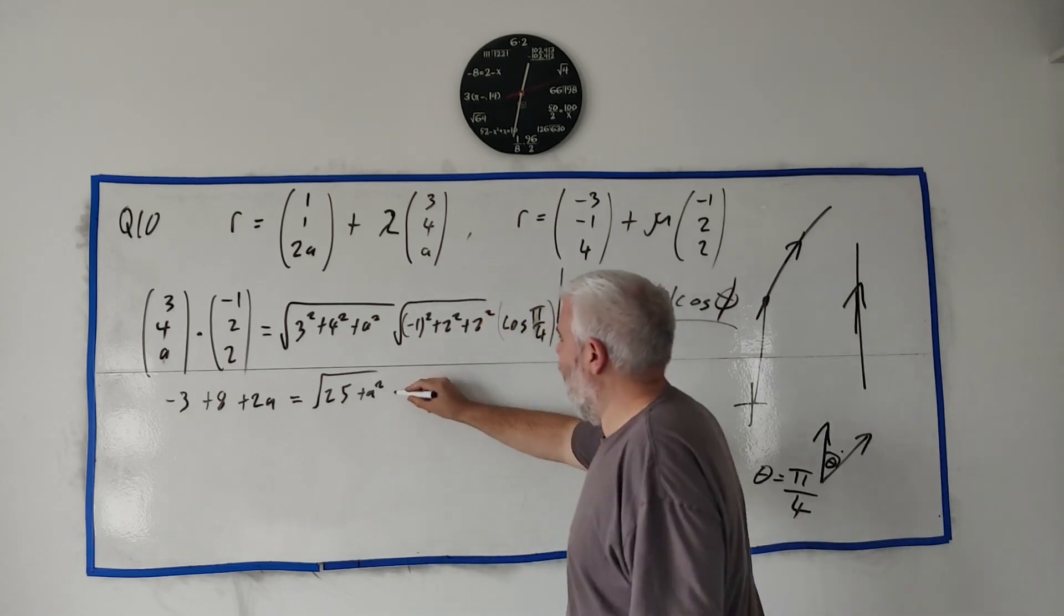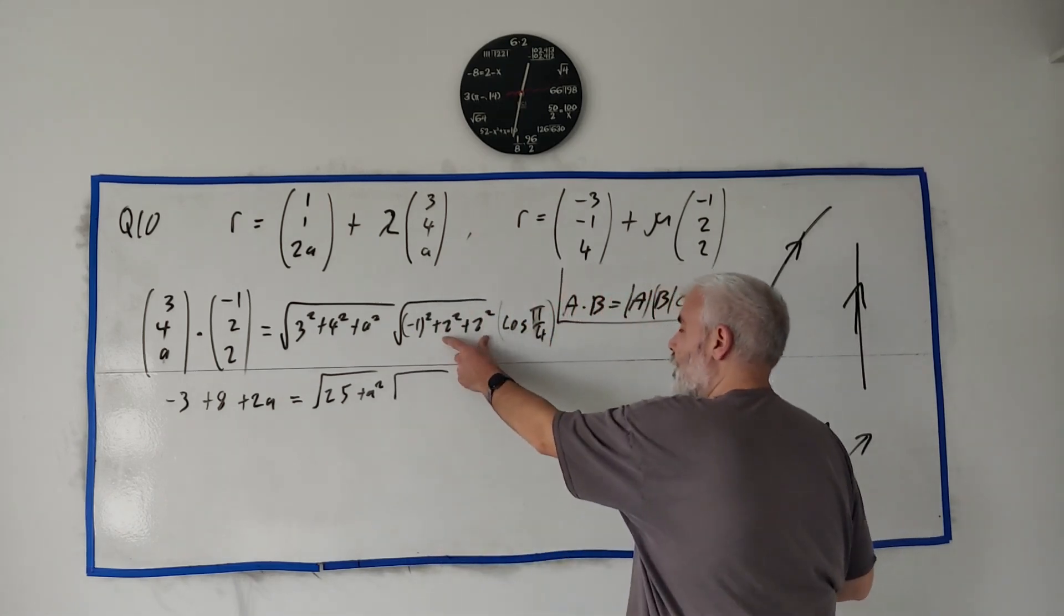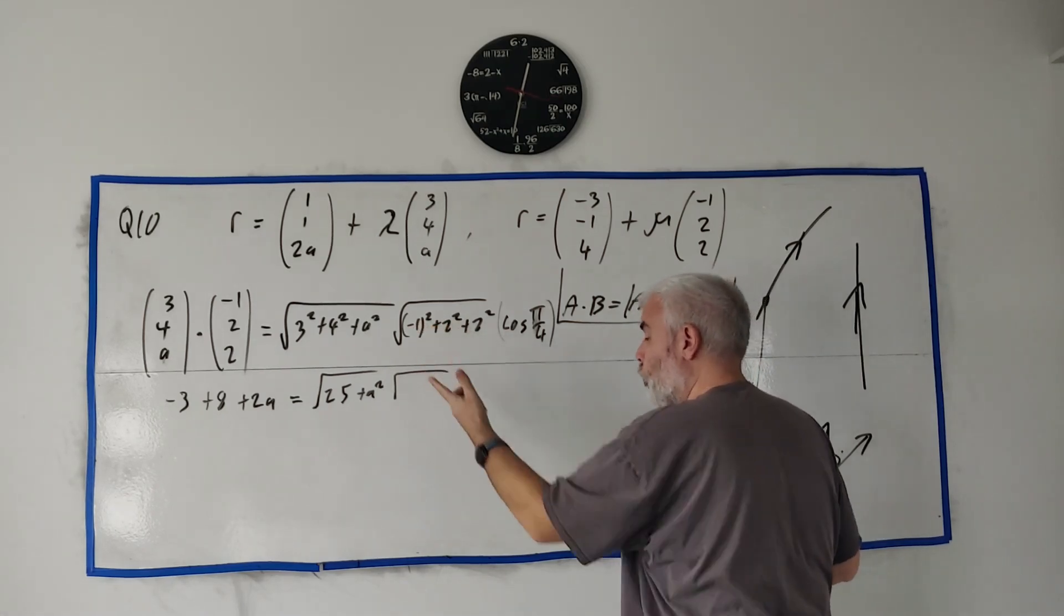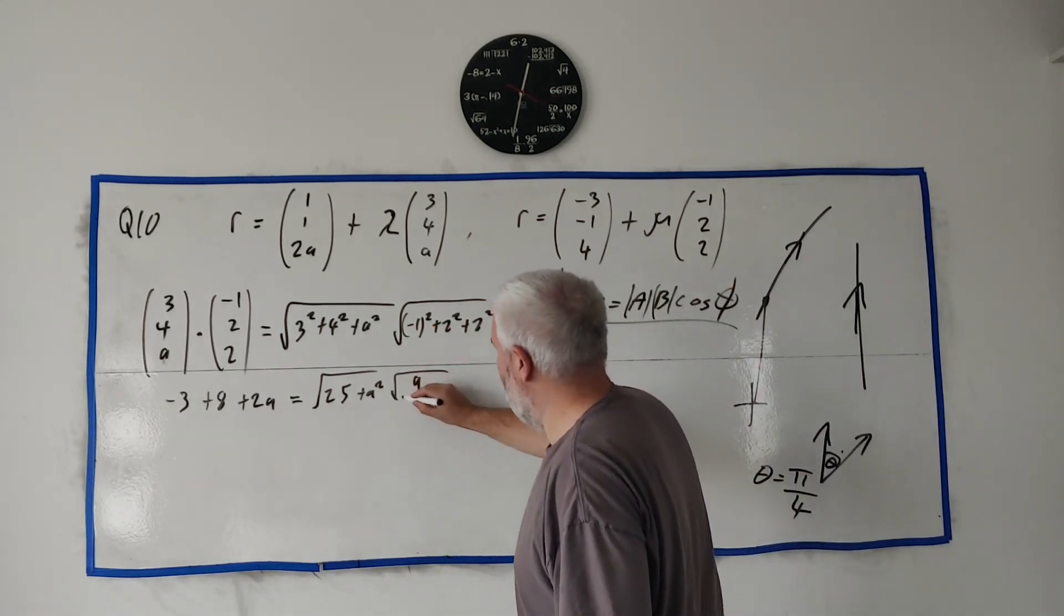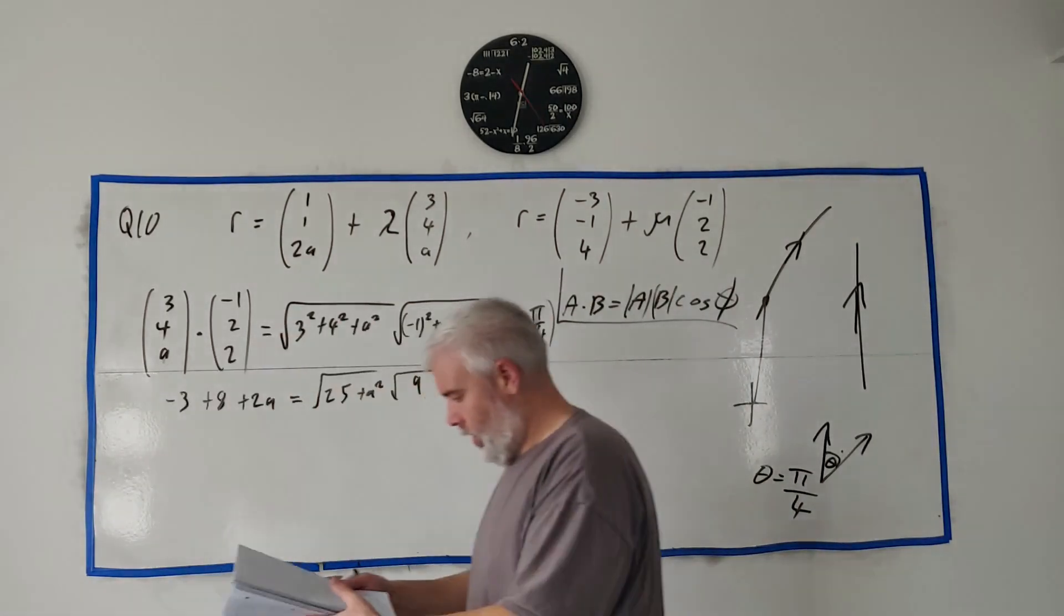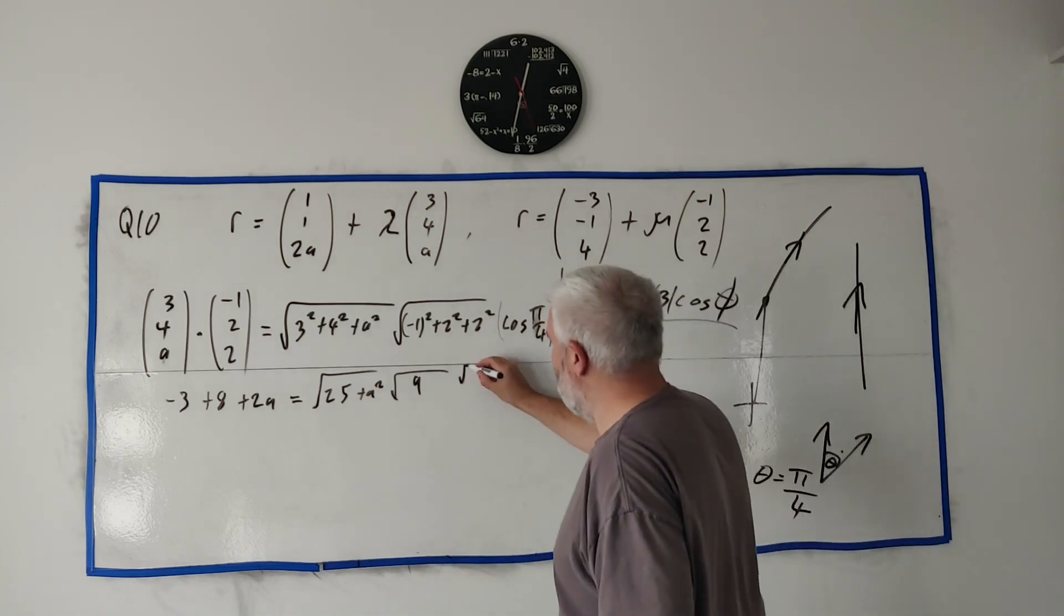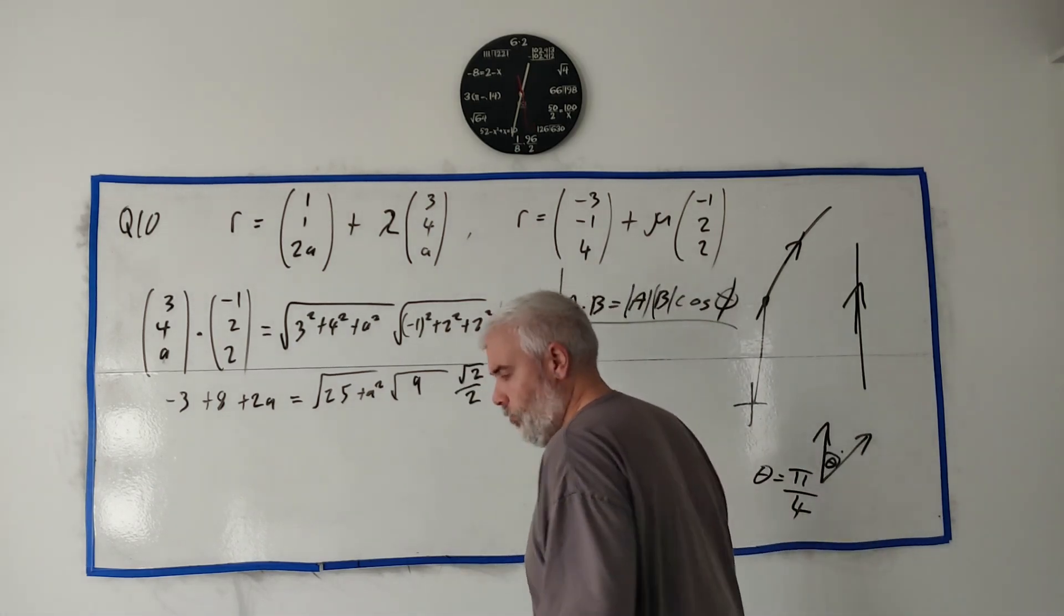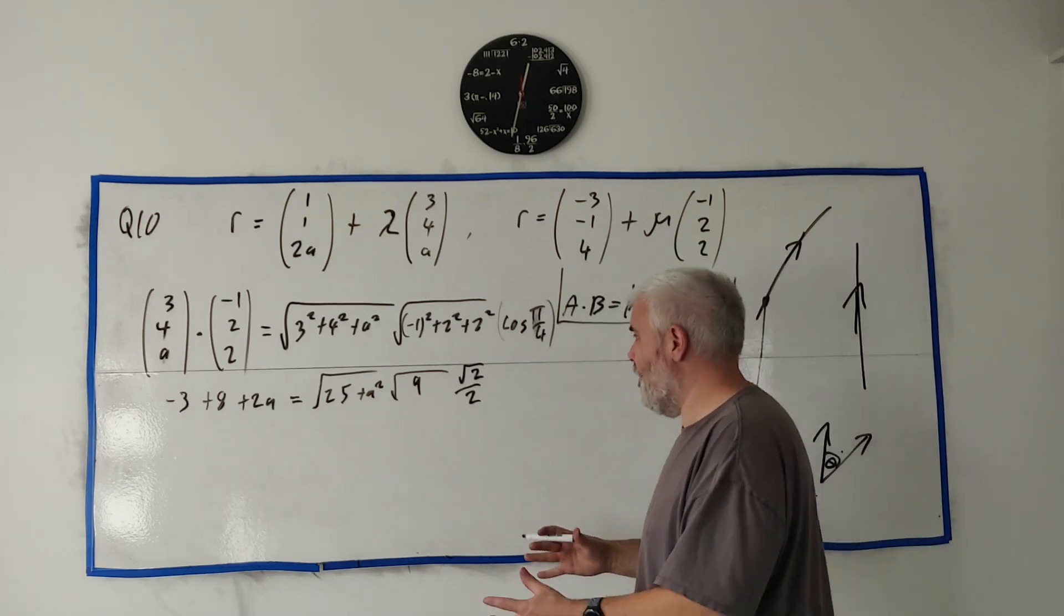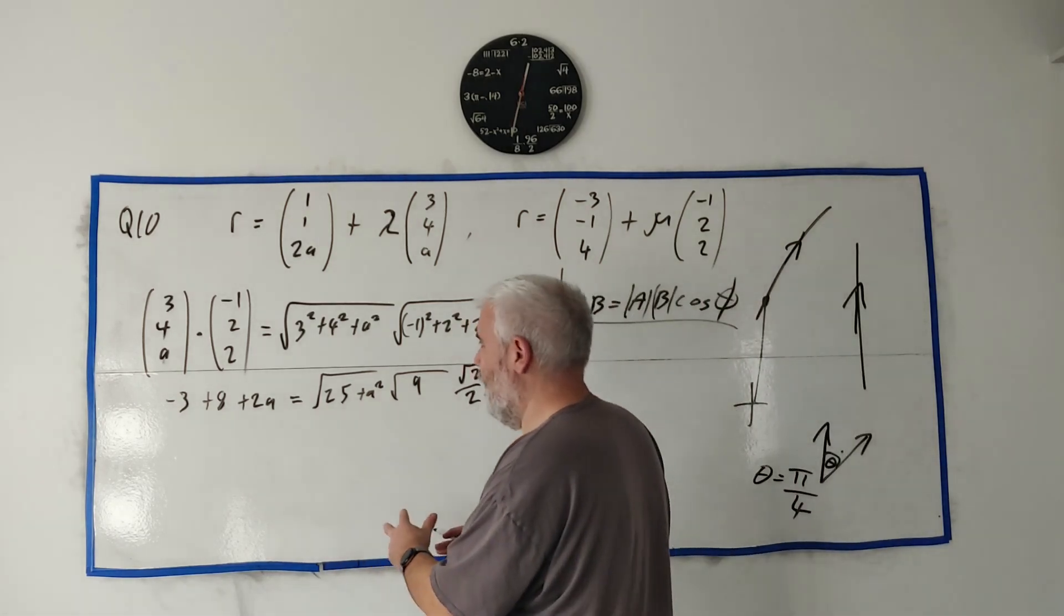We can clean it up a lot more. Let's multiply both sides by 2 and divide—no, leave the 3 over here—and we get 8 - 3 becomes 5, 5 × 2 is 10, 2a × 2 is 4a. That equals √(25 + a²) times 3√2.